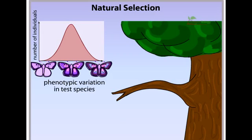The environment in which a species lives exerts selective pressure on the individuals of that species. Before we consider the population of butterflies shown in the graph, which we call the test species, let's consider the environment in which this population lives.